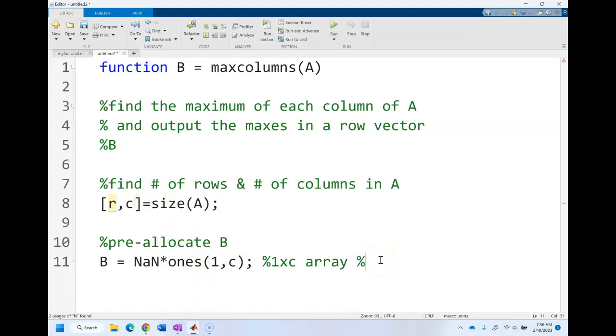We could also do B equals zeros one comma c. It's up to you which way you want to allocate. Do you want to fill it with zeros and then replace those zeros with the numbers, or do you want to fill it with not a number and replace the not a numbers with the maxes.